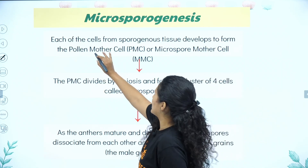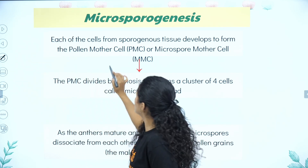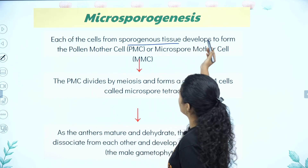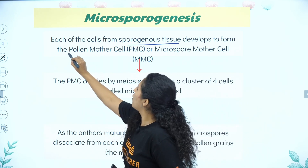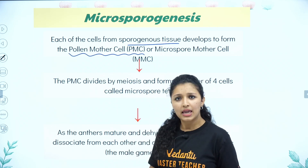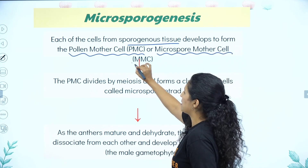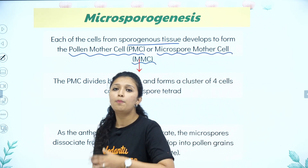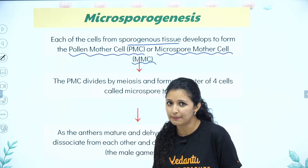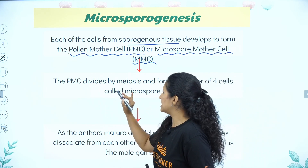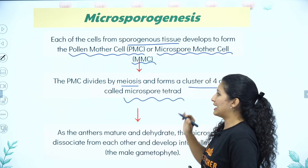Cells from the sporogenous tissue differentiate and form pollen mother cells, or PMC — also called Microspore Mother Cell, or MMC. The PMC divides by meiosis and forms a cluster of four cells called a Microspore Tetrad.